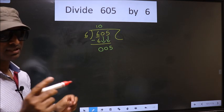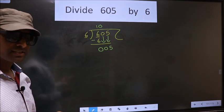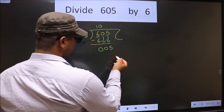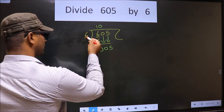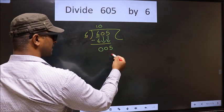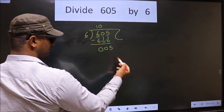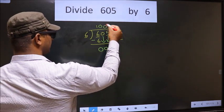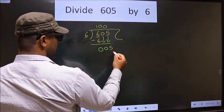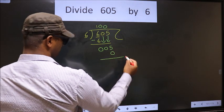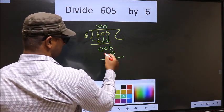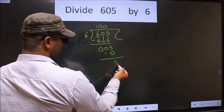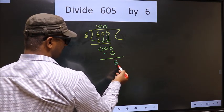Instead, what you should think of is: what number should we write here? If we write 6 here, that is larger than 5, so what we do is we take 0 here. So 6 into 0 is 0. Now you subtract 5 minus 0 equals 5. Here we did not bring any number down.